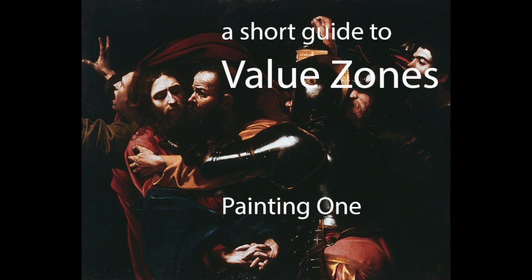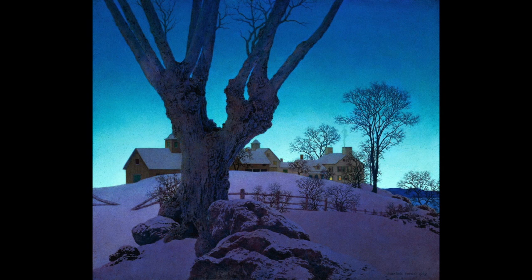A short guide to value zones. We're going to start by defining what I mean by that and then get into some examples. When we talk about a good painting, the idea is that a good painting is going to be utilizing three values in a strategic way. What three values and how they're used differs.